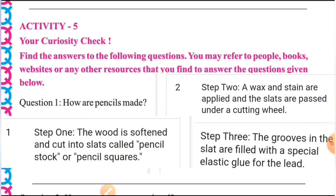Activity 5, first question: How are pencils made? Pencils कैसे बनते हैं? यहाँ पर तीन steps हैं जिससे pencil बनता है। First step: The wood is softened and cut into slats called pencil stock or pencil squares. जो लकड़ी होती है वो बहुत soft होनी चाहिए, जिससे सही measurement से उसको cut किया जाता है slats में — इसको pencil stock या pencil squares बोलते हैं।